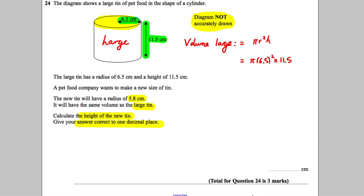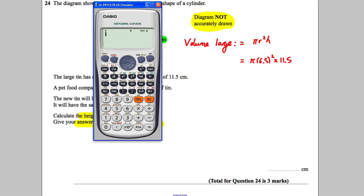Get your calculator out. I'm going to type π × 6.5² × 11.5. Use brackets, that makes it nice and easy. And you get 3887 over 8 π.